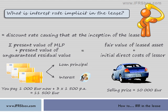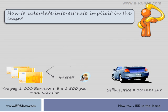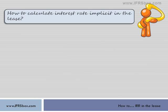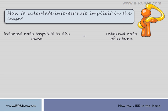In other words, if we discount all your payments by the interest rate implicit in the lease, we should get to the original amount of the loan that you took in the form of the lease. But how to calculate this interest rate implicit in the lease? It's not so complicated when you realize that it is in fact the internal rate of return of a series of receipts and payments arising from the lease — that is, the rate at which the net present value of all receipts and payments equals zero.